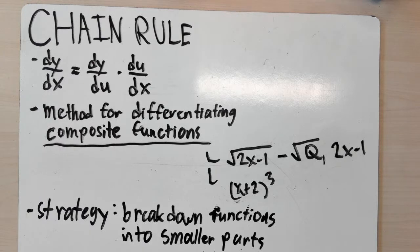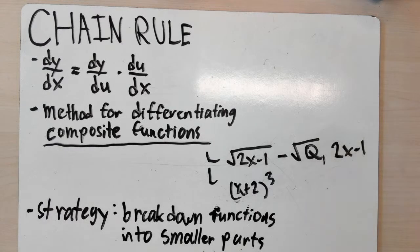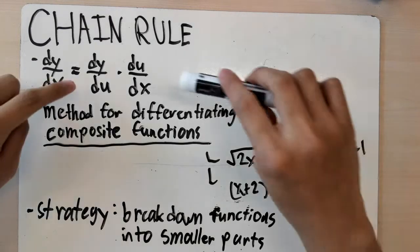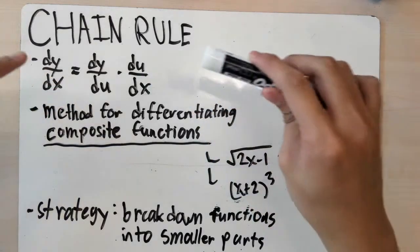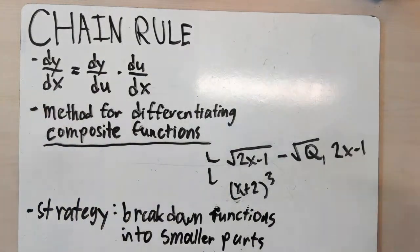The strategy here is to look at a composite function, break it down into smaller parts or smaller functions, find the derivatives of those functions, and then find the product of those derivatives. This will be clearer with an example.